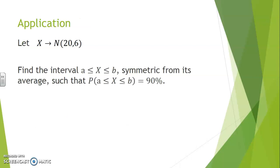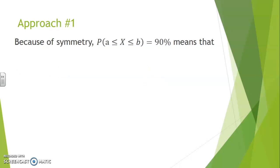Here's an application. Suppose that X follows a normal law with average 20 and standard deviation 6. Find the interval from a to b that is symmetric on both sides of the average, such that 90% of the probabilities are contained in this interval.